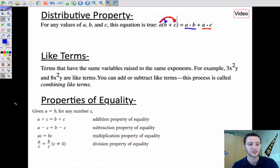The second one is like terms. Terms that have the same variables raised to the same exponents are like terms. So for example here, we've got 3x²y and 8x²y. So the x²y have the same variables to the same powers, so they're like terms.